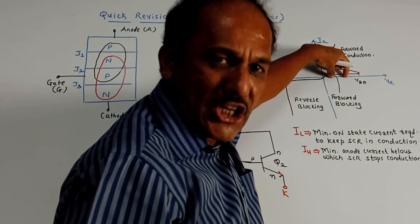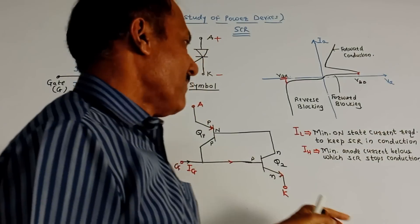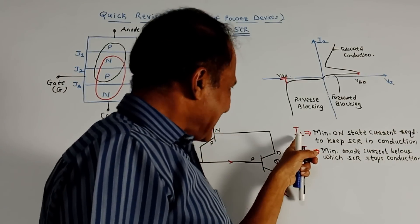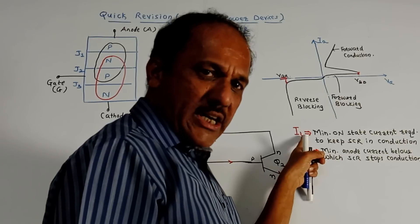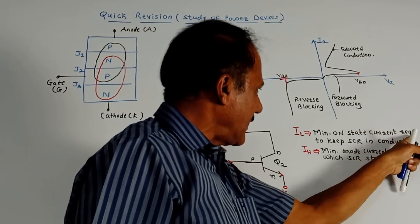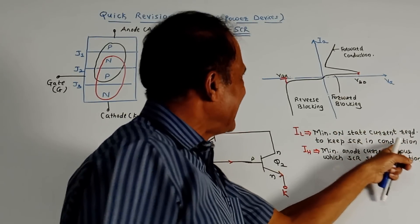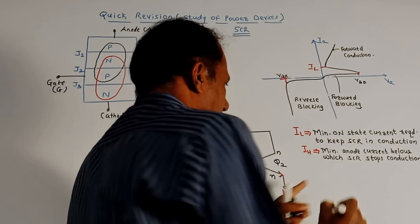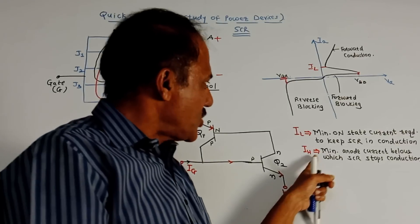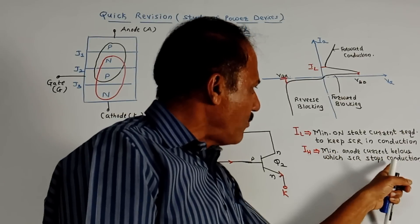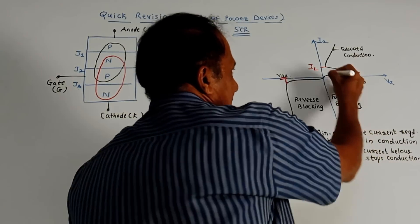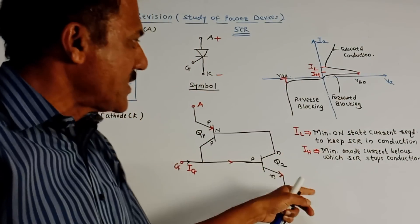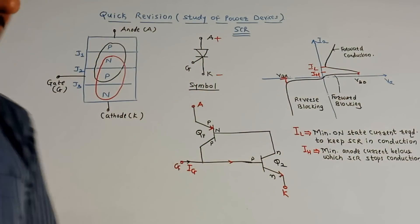There is a leakage current in forward blocking mode. Two important terms: IL is the latching current — it is the minimum on-state current required to keep the SCR in conduction. IH is the holding current — it is the minimum anode current below which the SCR stops conduction.